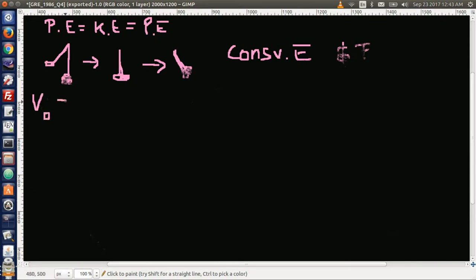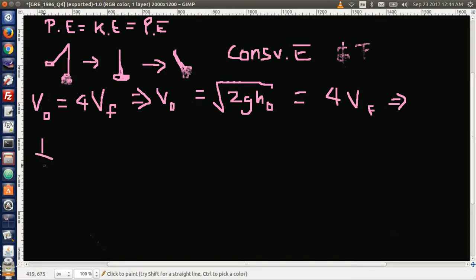So we have v₀ equals 4 times v final. Remember that v₀ equals the square root of 2gh₀. So we have square root of 2gh₀ equals 4v final. Let's solve for v final: we have v final equals one quarter times the square root of 2gh₀.